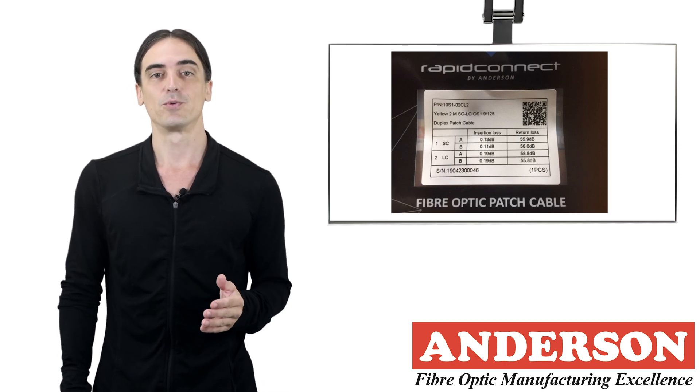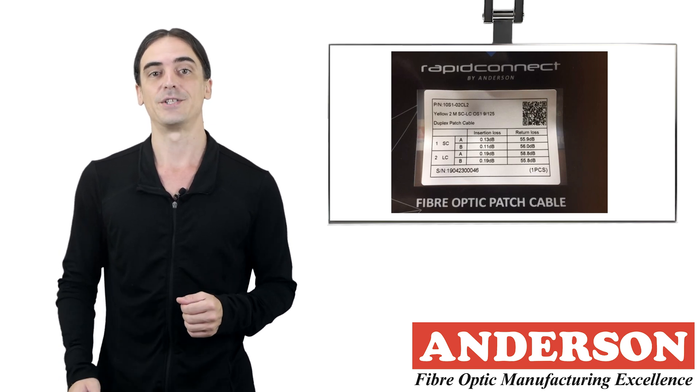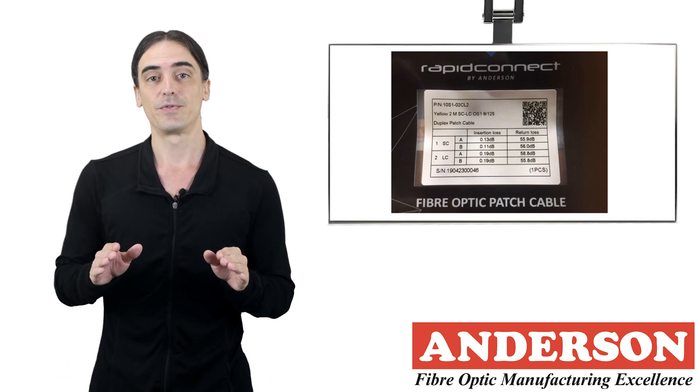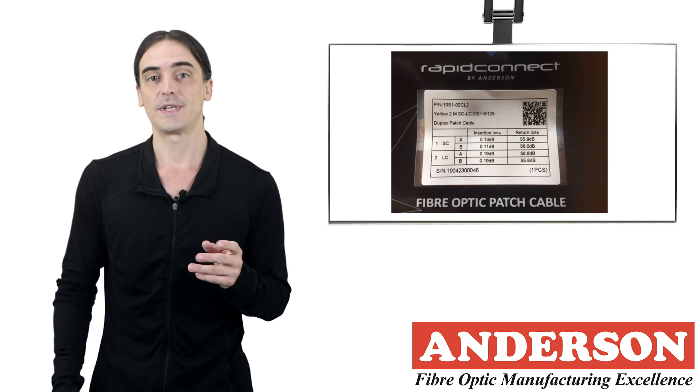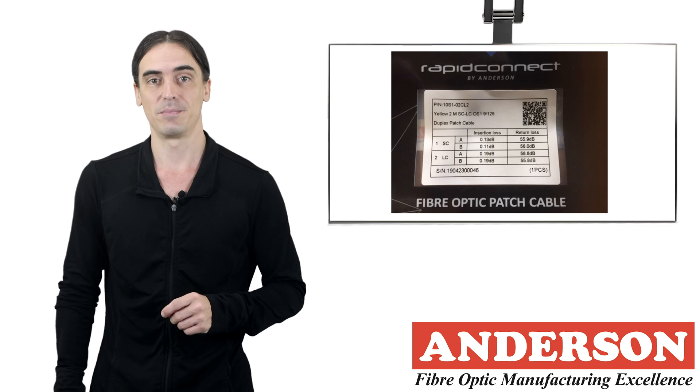Fiber optic patch cables will come with loss results, and these results will be listed on packaging. They should be tested in both directions, so there should be four test results for a duplex cable or two results for a simplex cable.